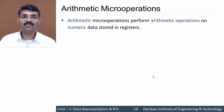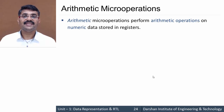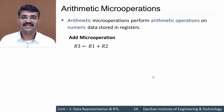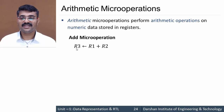Let's see the first type, that is the add micro operation. It is very basic and represented as r3 = r1 + r2, meaning the content of r1 is added to r2 and the result is stored in r3. So it is a very basic operation.